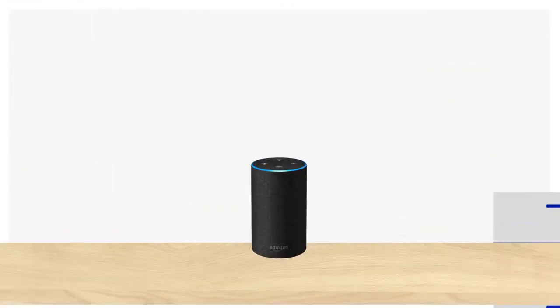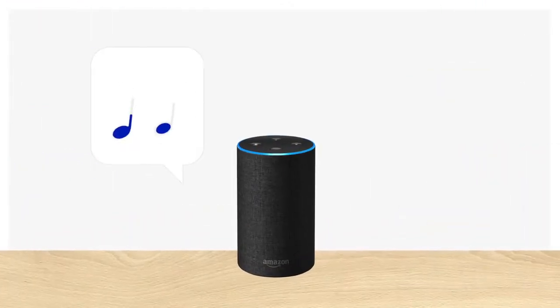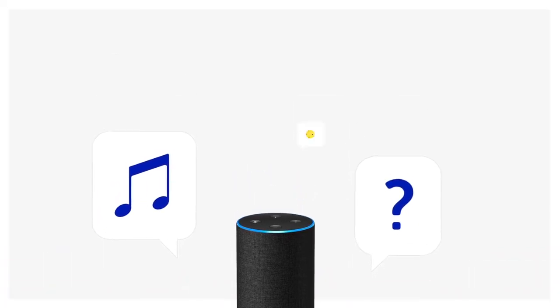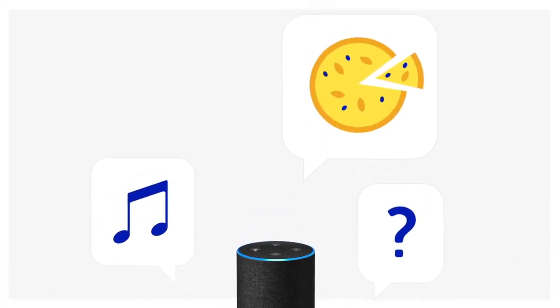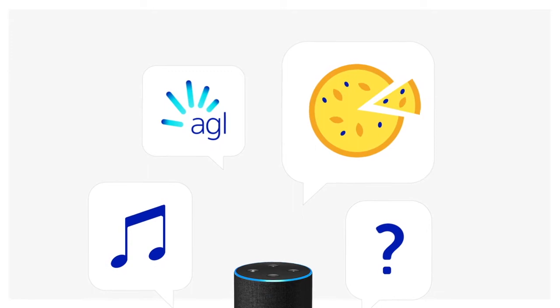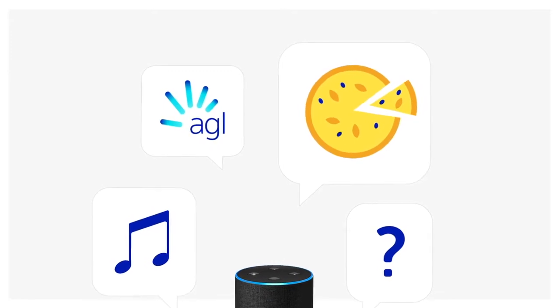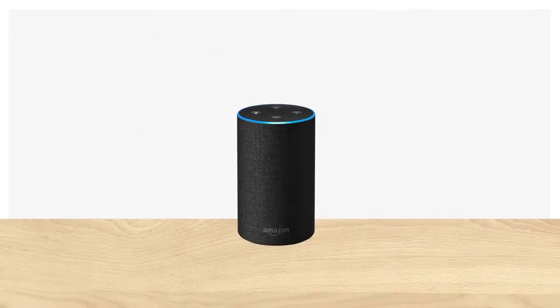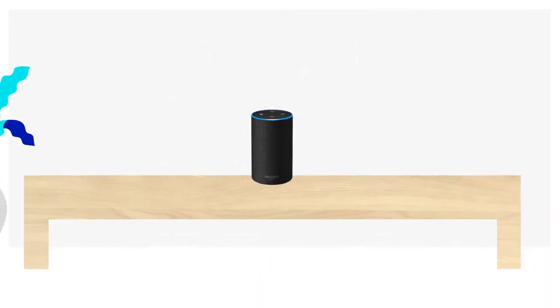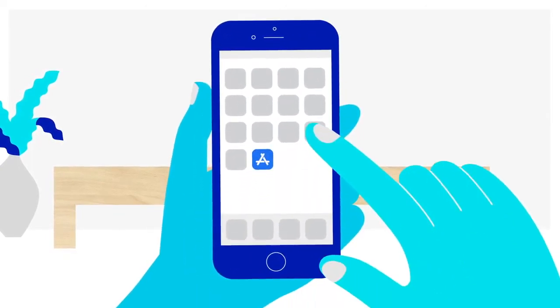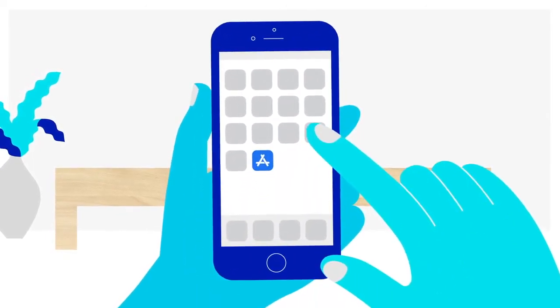Amazon Alexa is the voice-controlled service that allows you to play music, ask questions, order a pizza, and now get updates on your AGL energy account. All you have to do is ask. Here's how to get your AGL skill up and running with your Amazon Alexa enabled device.